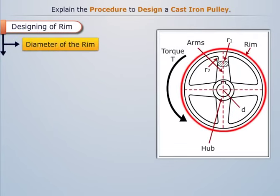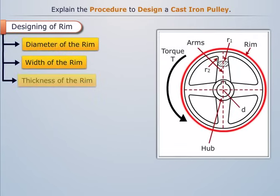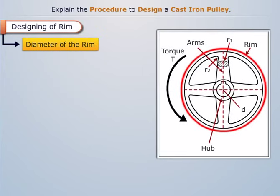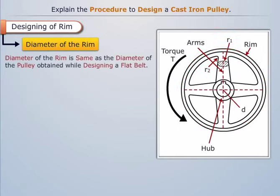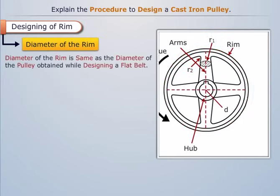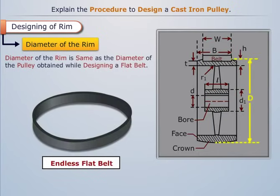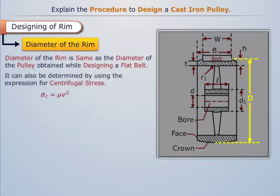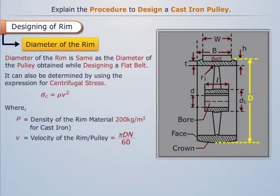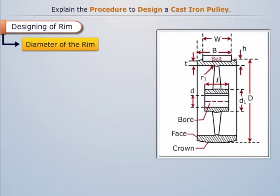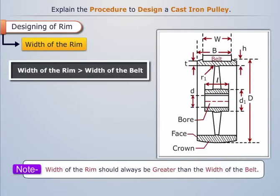Let's first design the rim. We need to determine the diameter, width, thickness, and crown height. The diameter of the rim is the same as the diameter of the pulley obtained while designing a flat belt. It can also be determined by using the expression for centrifugal stress. The width of the rim should always be greater than the width of the belt.